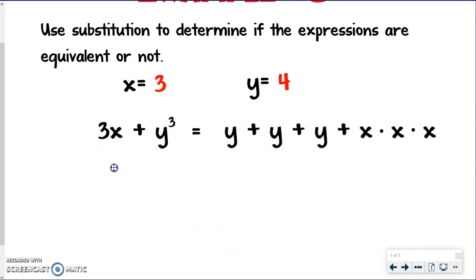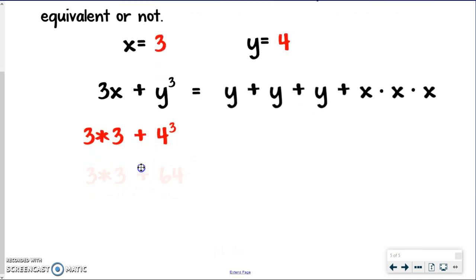So over here, I get 3 times 3 plus 4 to the third or 4 cubed. I'm going to do the exponent first. So I get 64 because it's 4 times 4, which is 16. And then 16 times 4. If you need to do that work off to the side, feel free. I'm going to do the multiplication next. So 9 plus 64 to get 73.